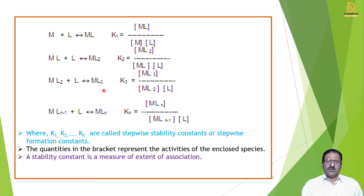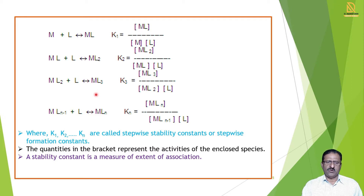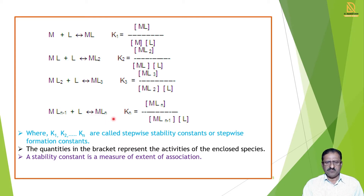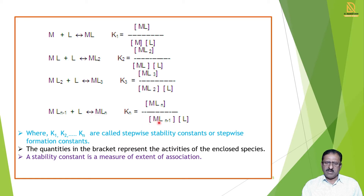In this way, we write the fourth, fifth, sixth, up to the nth ligand addition. When the last ligand is added, we write the reaction: ML(n-1) + L gives MLₙ. The stability constant for this step is Kₙ = [MLₙ] / ([ML(n-1)][L]). Thus K₁, K₂, K₃, ... up to Kₙ are all the stepwise stability constants or stepwise formation constants.